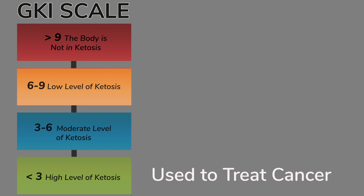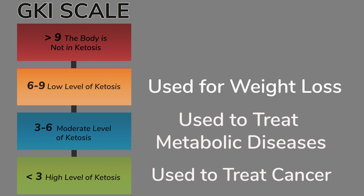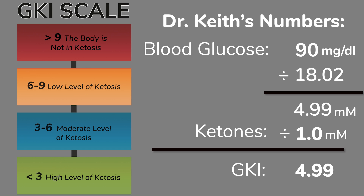A GKI of 6 to 9 demonstrates a low level of ketosis for people who may want to lose weight. A GKI of 3 to 6 demonstrates moderate levels of ketosis, which may be appropriate for addressing metabolic diseases including insulin resistance, type 2 diabetes, or obesity. Using my numbers, if I could get my ketones up to 1.0 — which is hard for me — with that 4.99 millimolar glucose, I'd be at a 4.99 GKI, putting me into moderate ketosis. In just that little bit of change in ketones, you're jumping through several levels on this GKI.